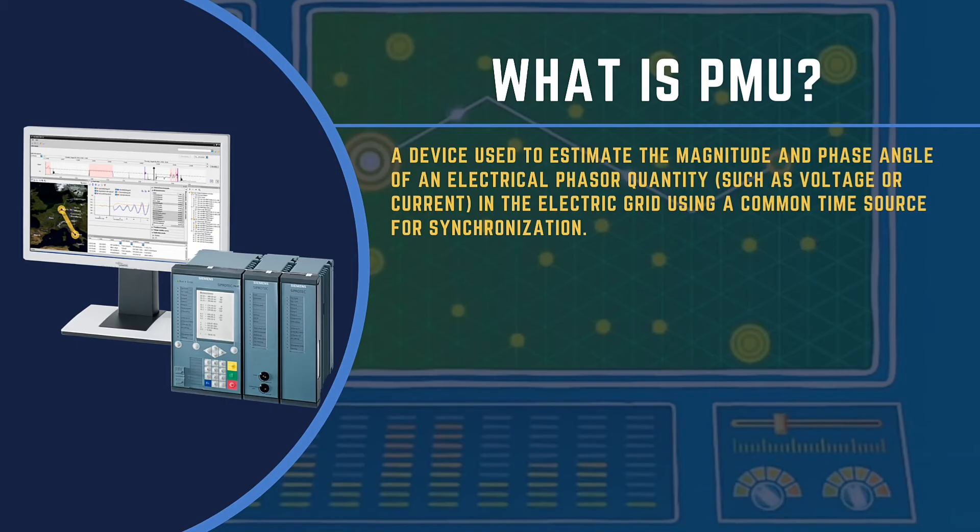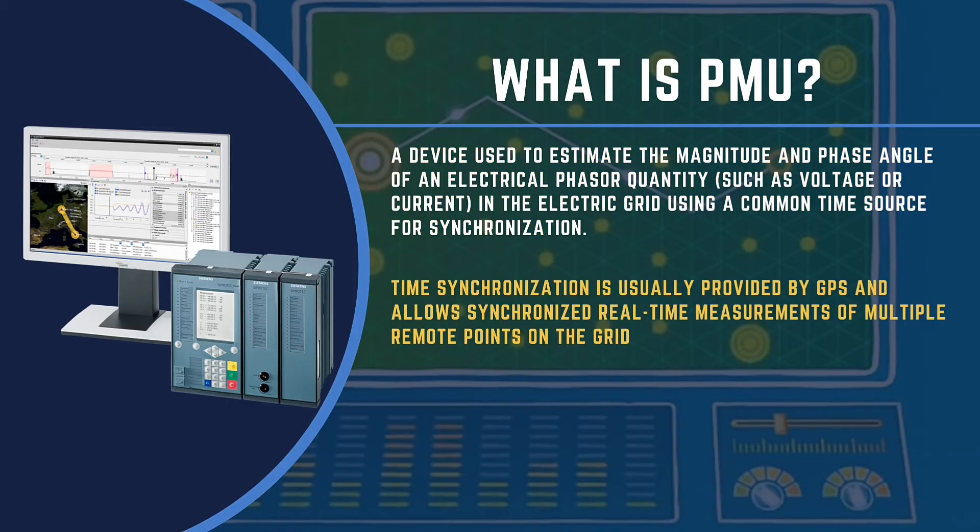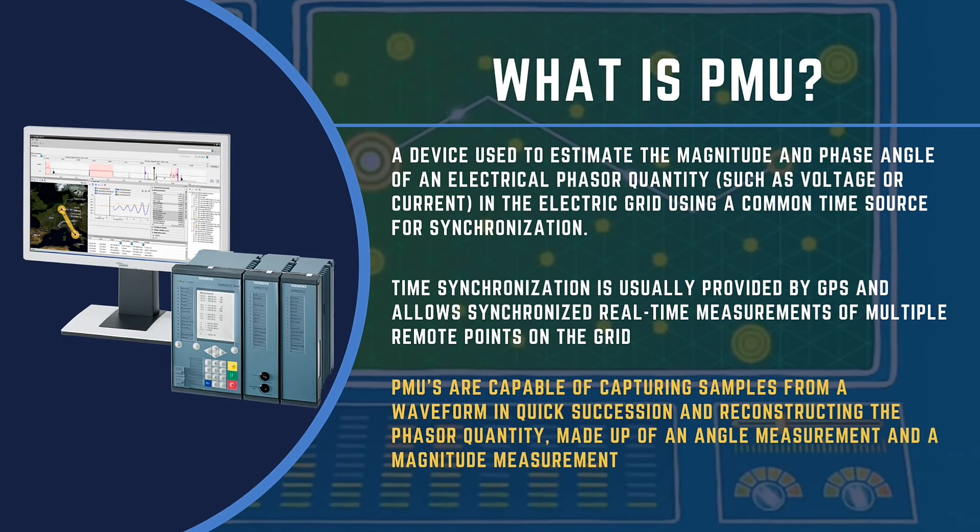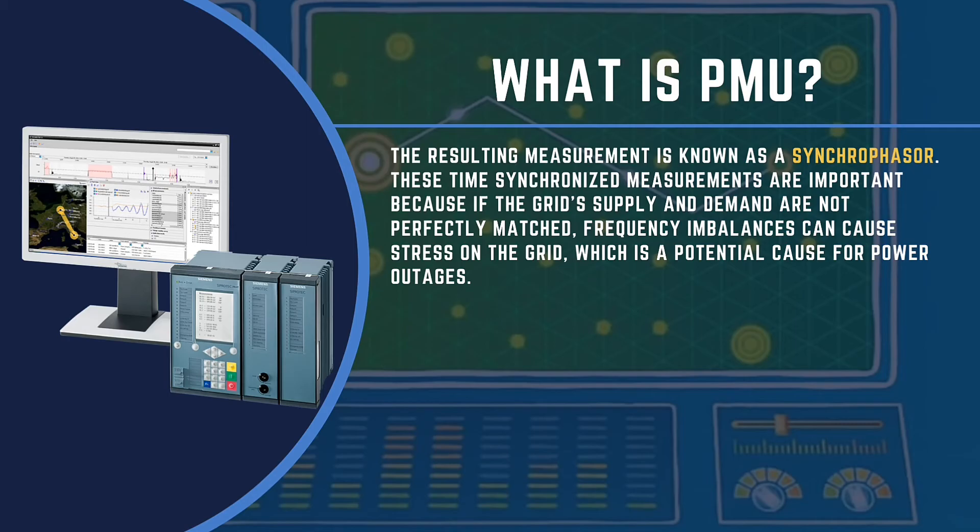A phasor measurement unit is a device used to estimate the magnitude and phase angle of an electrical phasor quantity, such as voltage or current, in the electric grid using a common time source for synchronization. Time synchronization is usually provided by GPS and allows synchronized real-time measurements of multiple remote points on the grid. Phasor measurement units are capable of capturing samples from a waveform in quick succession and reconstructing the phasor quantity, made up of an angle measurement and a magnitude measurement. The resulting measurement is known as a synchrophasor.